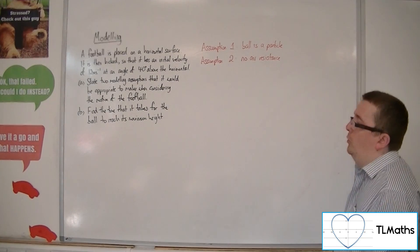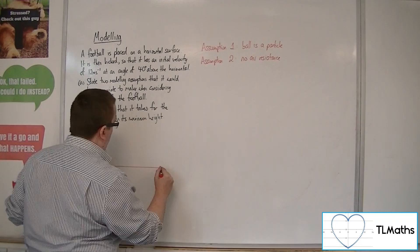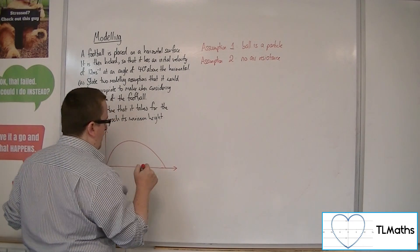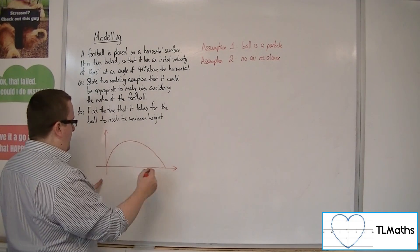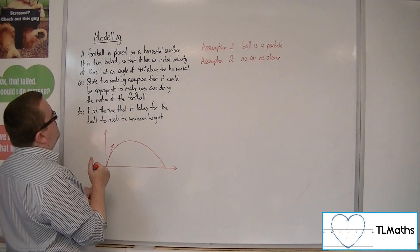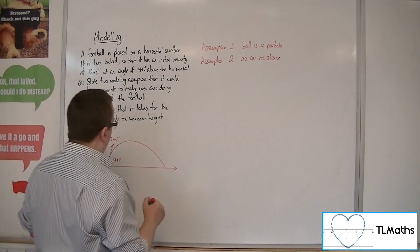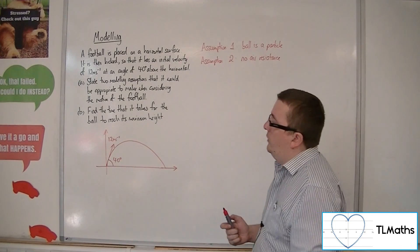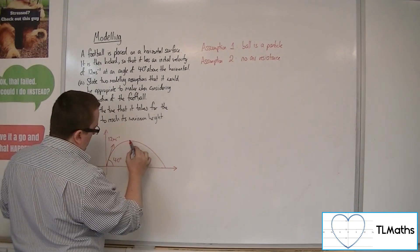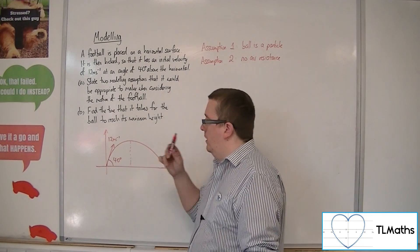For part B, we need to find the time that it takes for the ball to reach its maximum height. The situation is that this ball is going to travel in a parabolic shape — a parabolic projectile problem. It will have an initial velocity of 12 metres per second, kicked off at an angle of 40 degrees. Its maximum height will be achieved halfway along the trajectory.